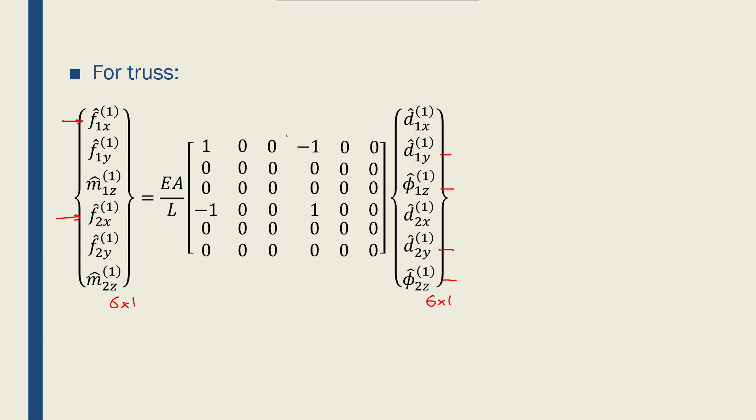In order to make this 6x6 local stiffness matrix for a truss element, all I have to do is find the corresponding locations for D1x, D1y, F1z, D2x, D2y, F2z,